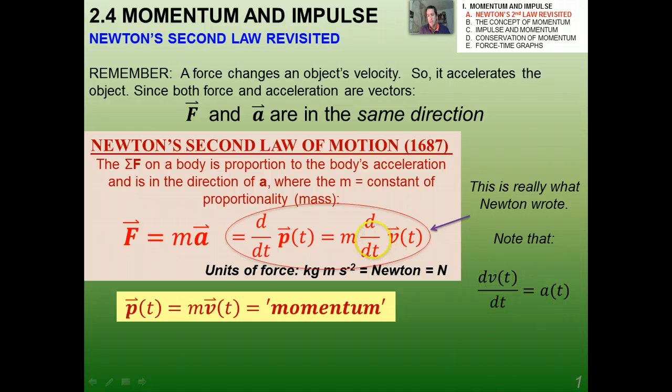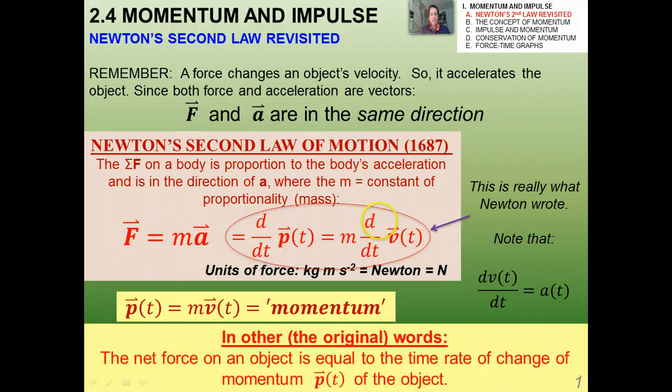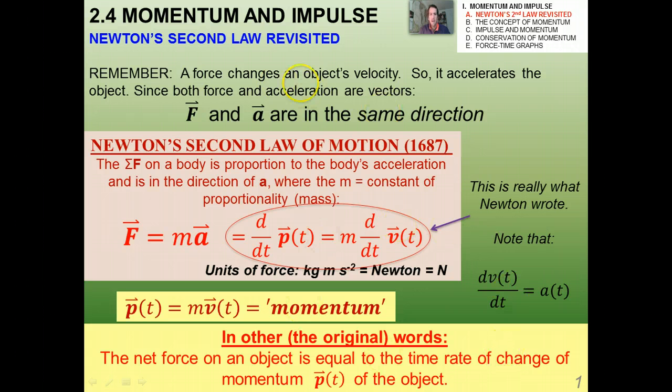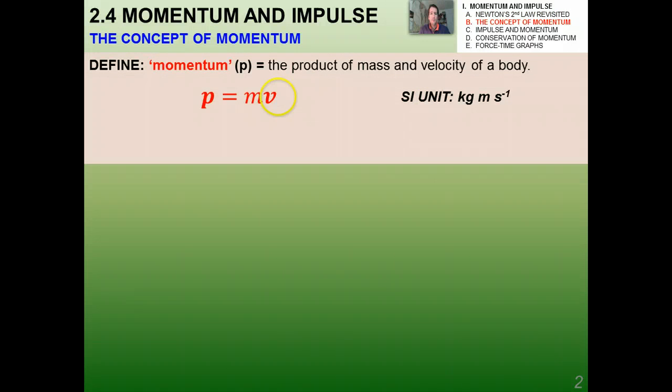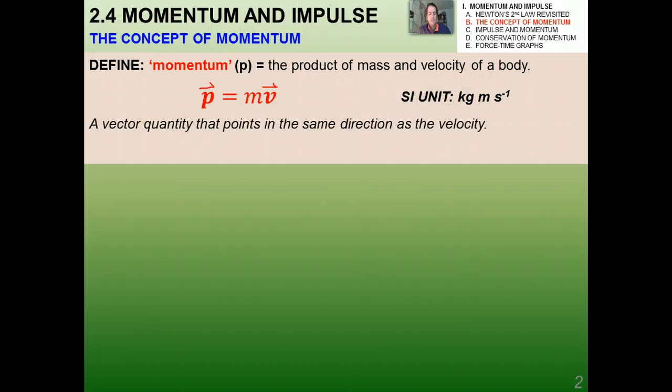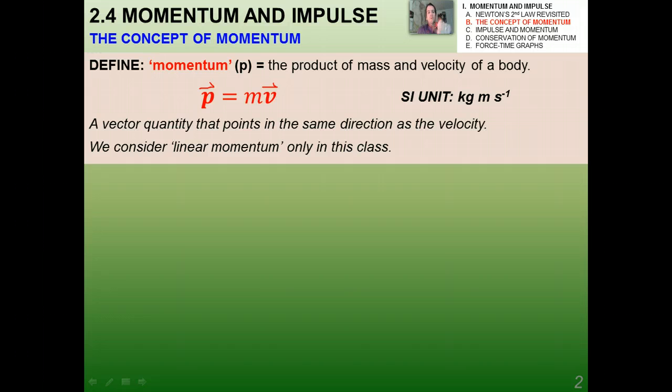I'm using the calculus notation here, which I've alluded to in class. This is really what Newton wrote - the time rate of change of the momentum equals the force acting on an object. Note that D by DT of V, or the time rate of change of velocity, equals acceleration. So lots of different ways to just write the same thing. In other words, in his original words, the net force on an object is equal to the time rate of change of momentum of the object. Very important slide here, and exactly the same slide that you've seen before when we studied Newton's laws.